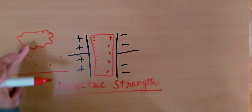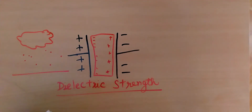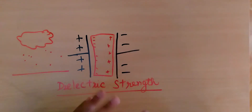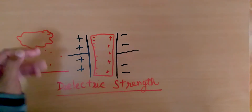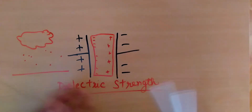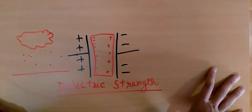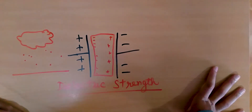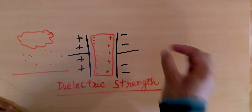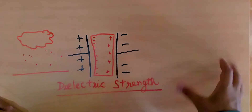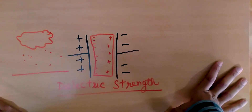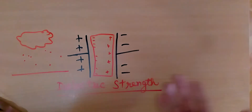As the charge separation increases, the potential difference between the cloud and the ground increases, and so does the electric field. After a certain point, that electric field gets so strong that the air can no longer stop the current from flowing, and you get a current flow which we see as the lightning bolt. That is why lightning happens — the potential difference between the cloud and the ground exceeds the dielectric strength of air. That is what dielectric strength means.